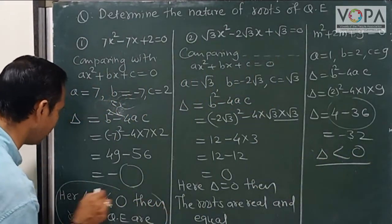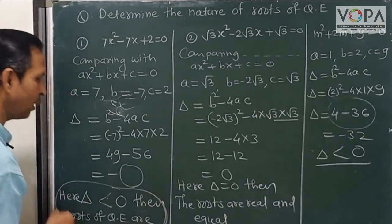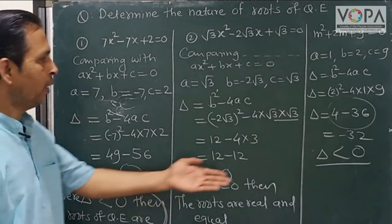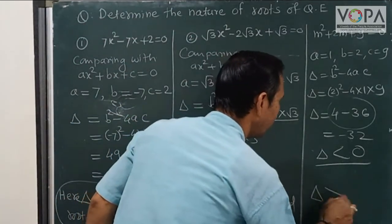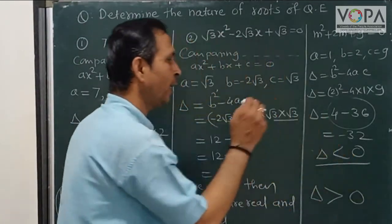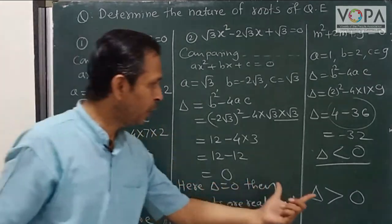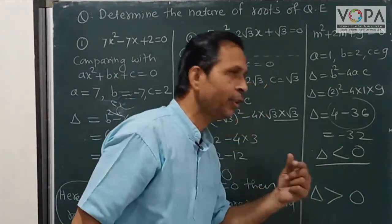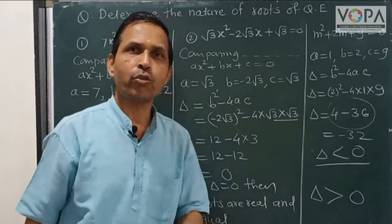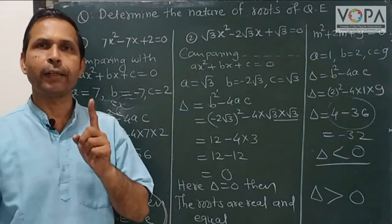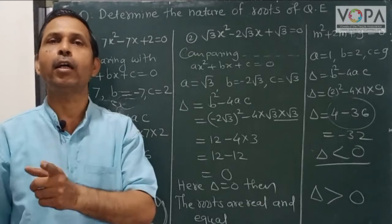So here is our conclusion. When delta is less than 0, the roots are not real. Now when delta is greater than 0, we can say the roots of the quadratic equation are real, unequal. So from these examples, when delta is greater than 0, the roots of the quadratic equation are real and unequal.